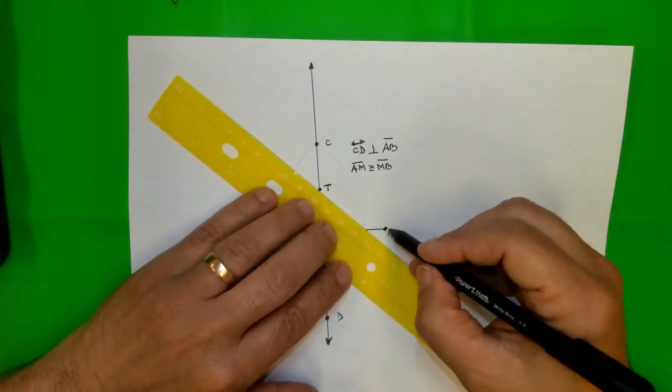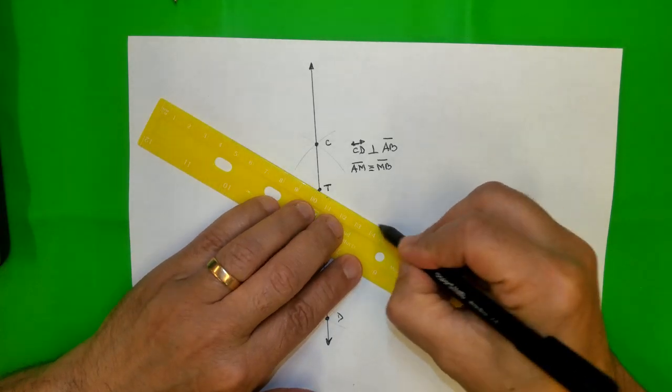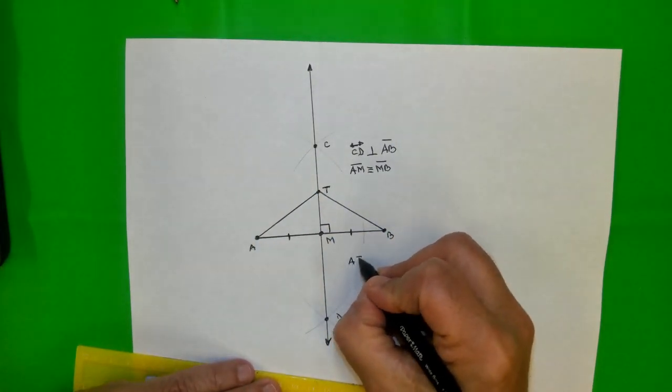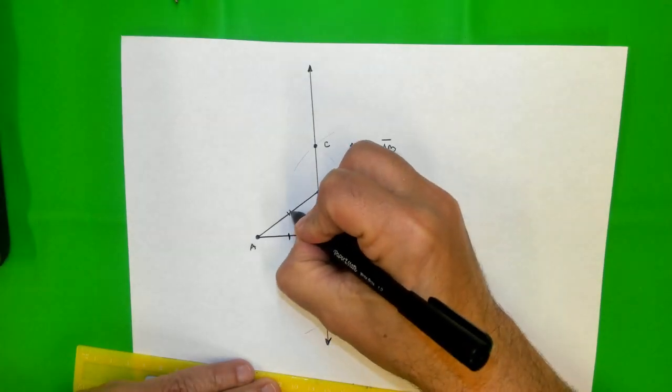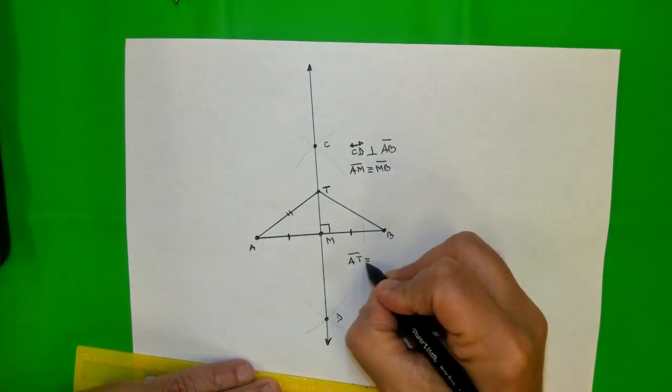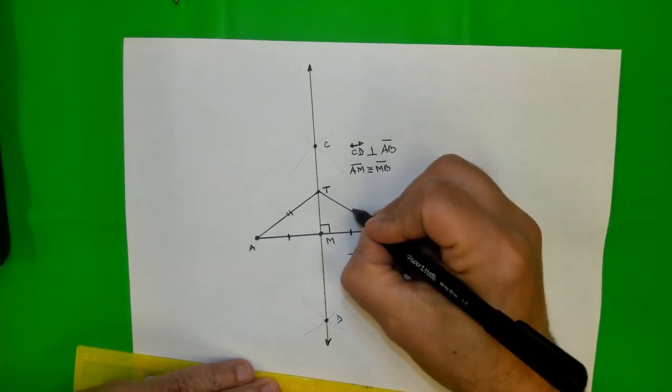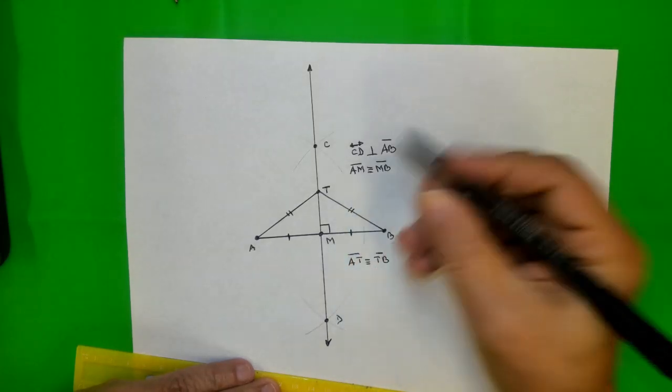...from the endpoints. TA is congruent to TB. And that's true for any point on the perpendicular bisector. You can pick a point here and do the same thing, eventually measure with your compass, or in case of a ruler in this moment, but the construction is done with a straight edge.